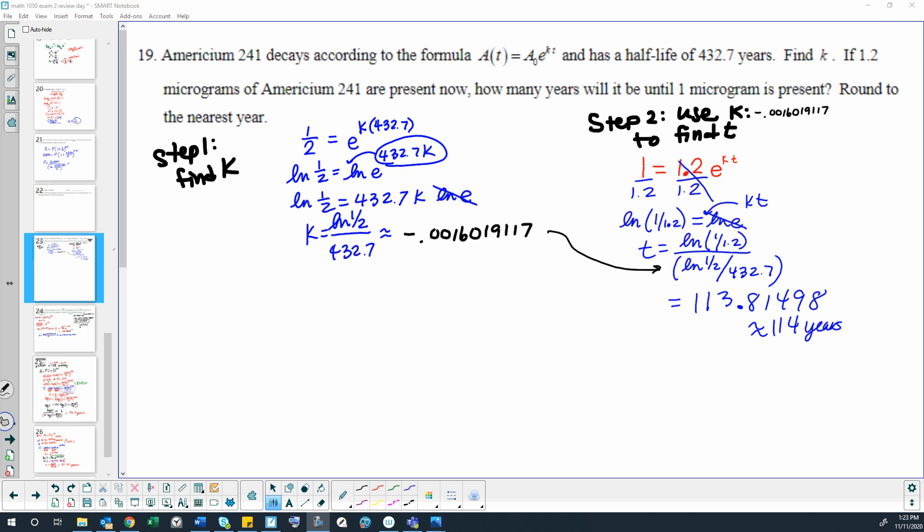All right, here is chapter 4 worksheet, question number 19. Americium 241 decays according to the formula A as a function of t equals initial amount A sub zero times e to the kt, where k is a constant and t is time. And it has a half-life of 432.7 years, so that means t is going to be in years.